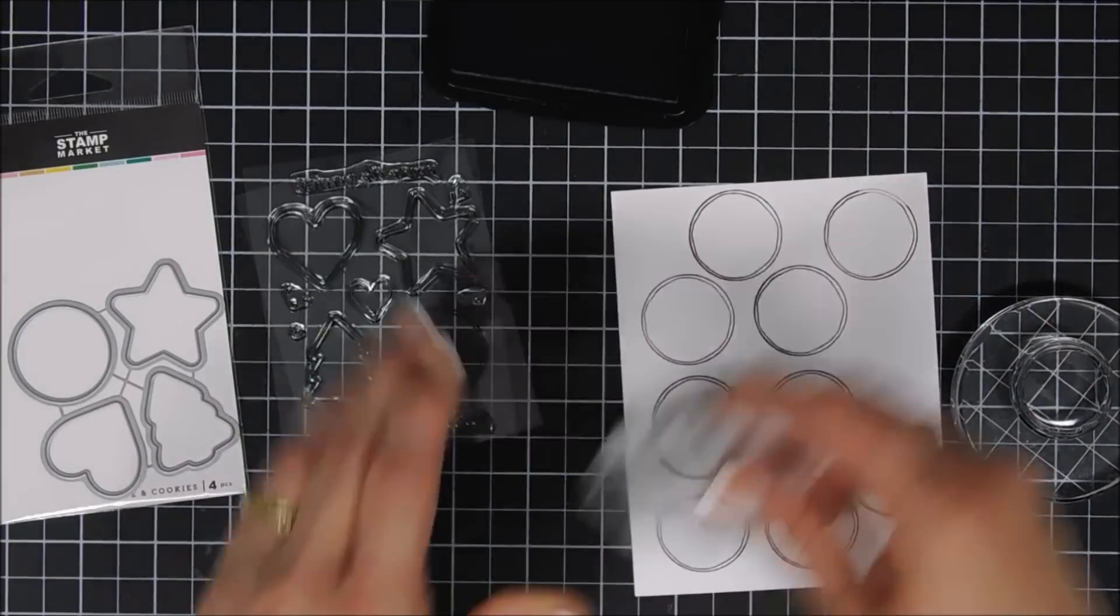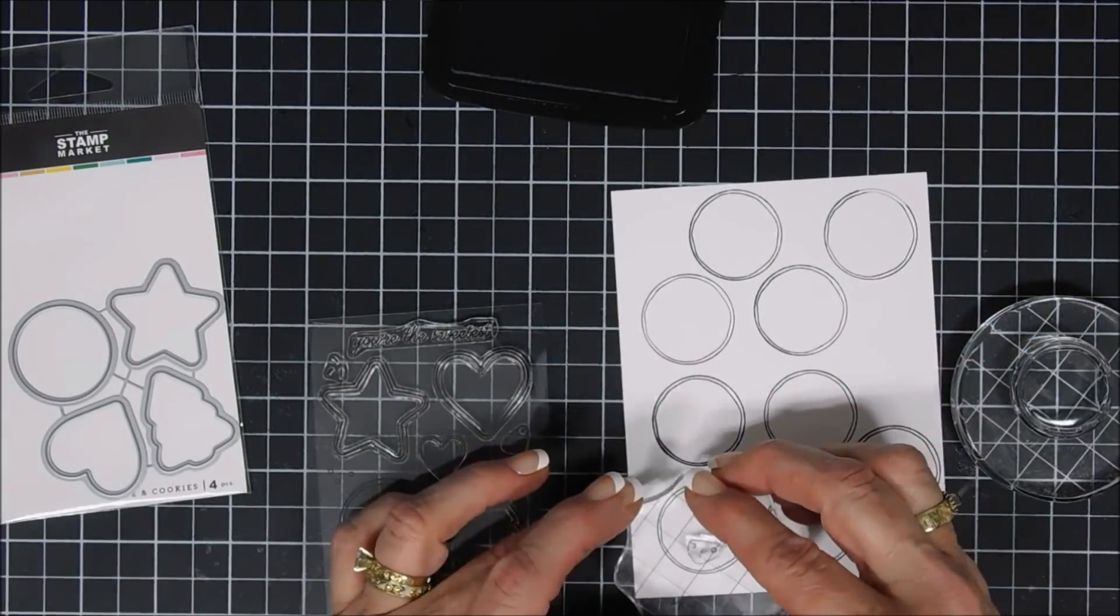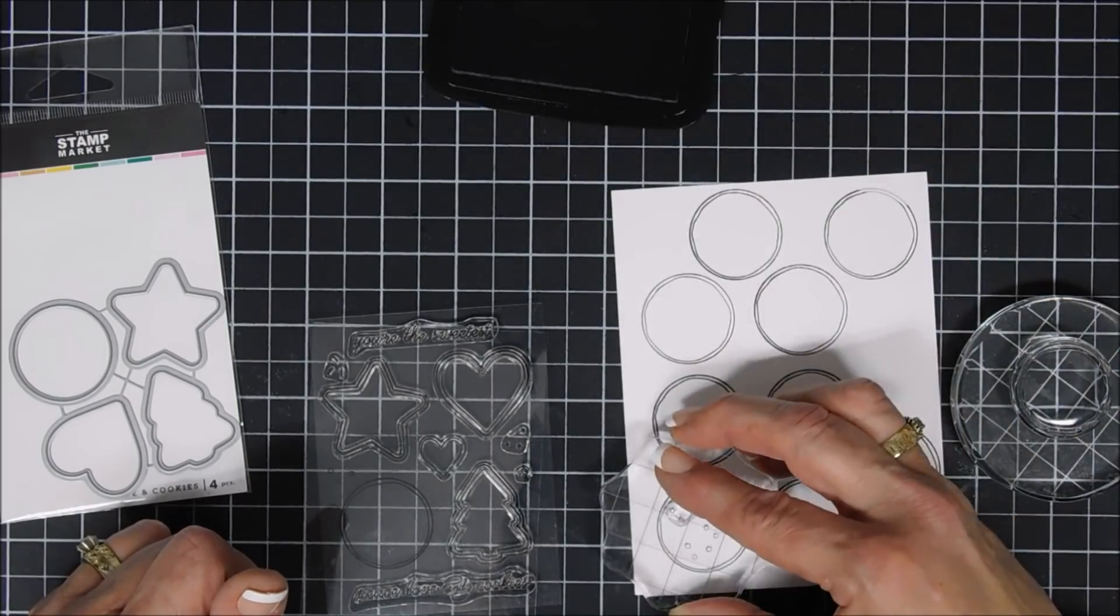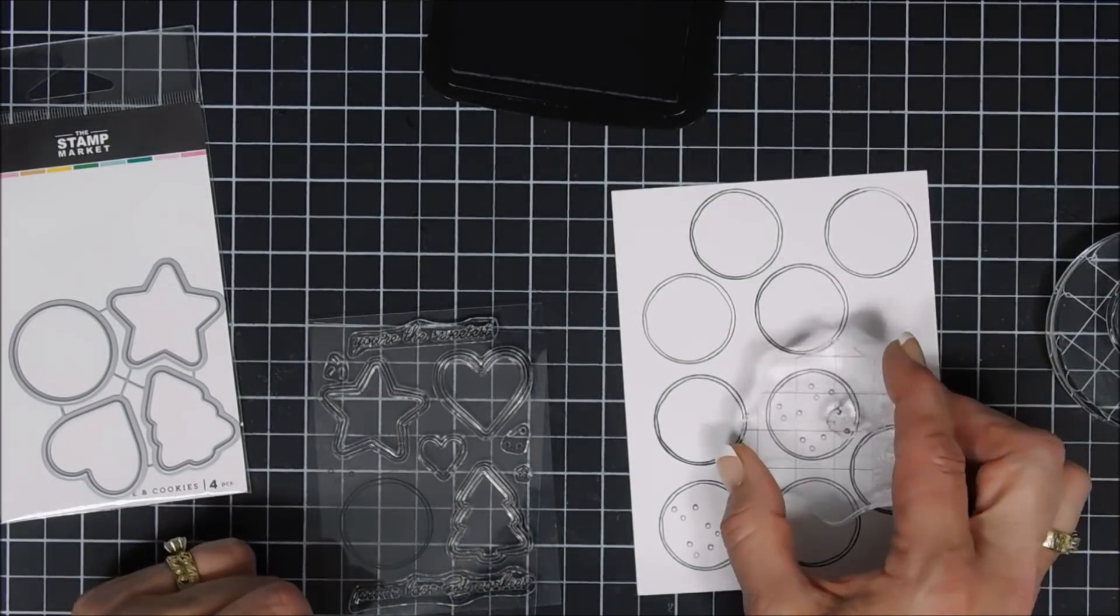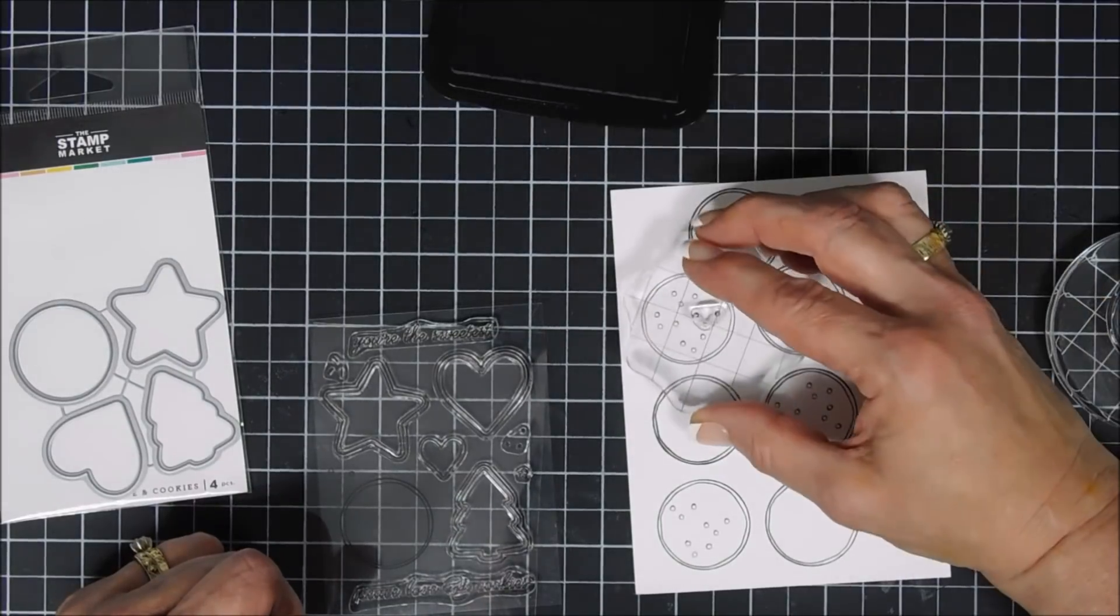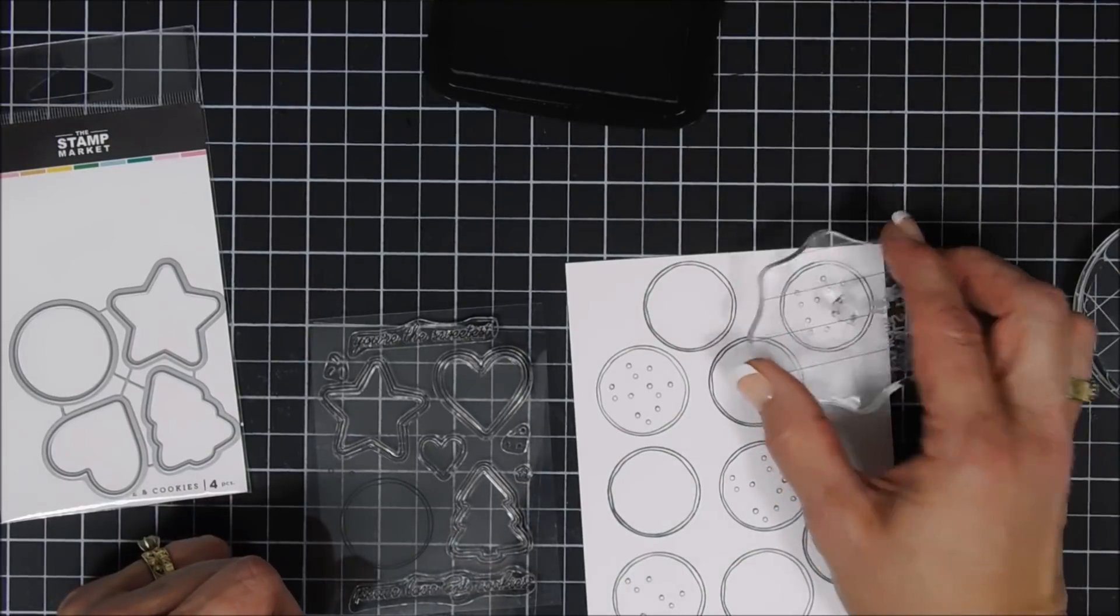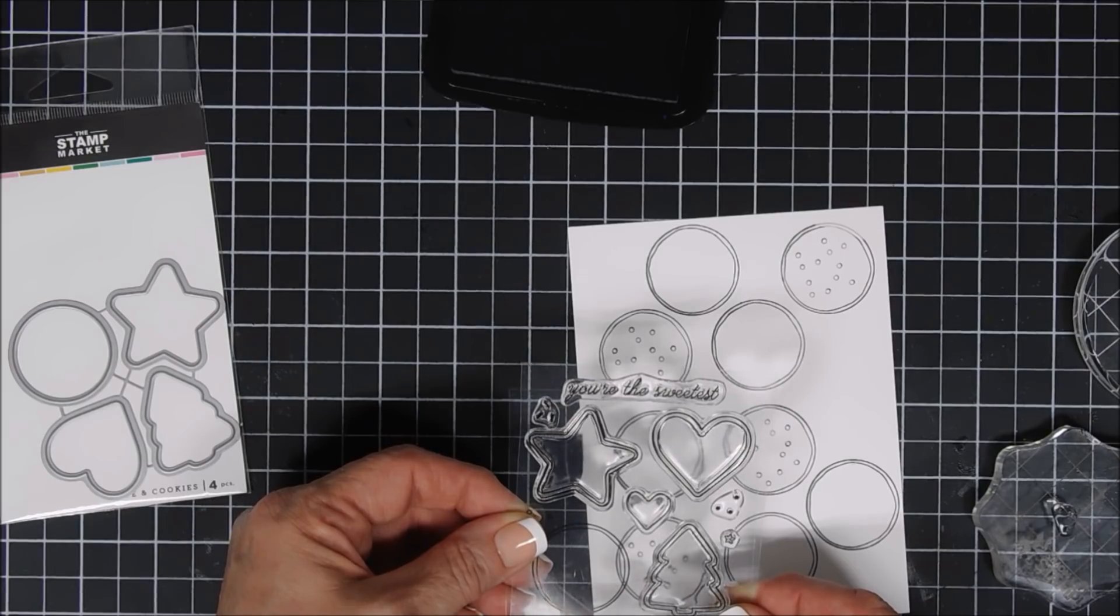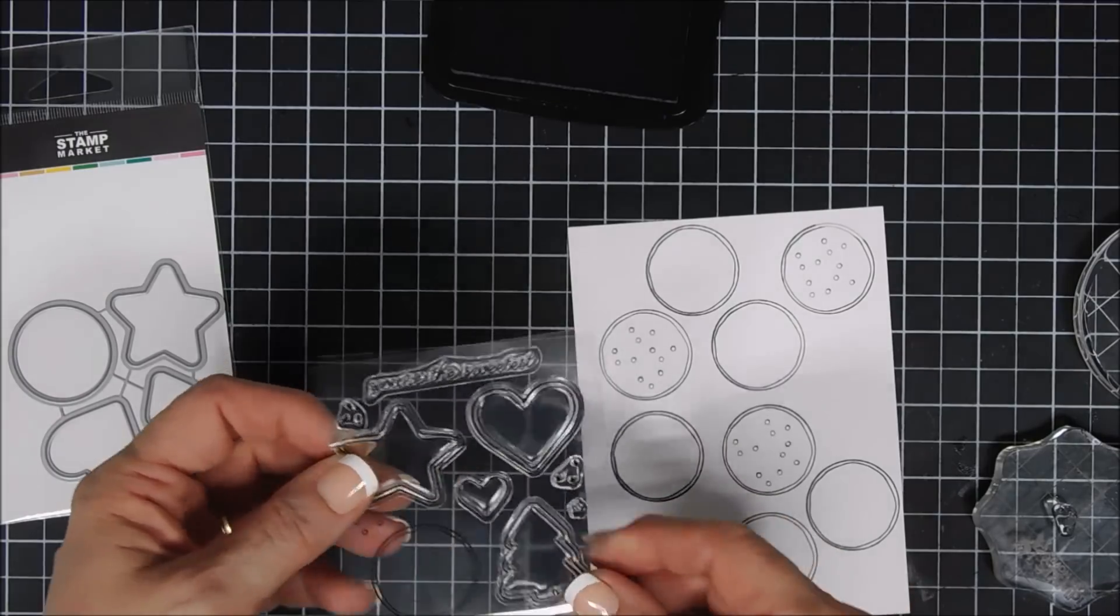After we have our cookie base stamped, we get to fill it in. There's a little stamp that has outlines of circles that are perfect for chocolate chips, so I'm going to add some chocolate chips to three of my cookies. There's a solid image in the stamp set that you could fill in your chocolate chips with ink, but since I'm going to Copic color my cookies, I'll just fill in the chocolate chips with my Copic markers.